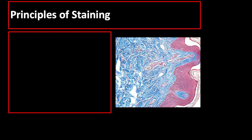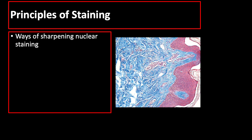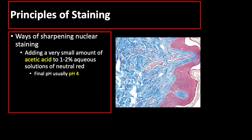Staining depends largely on the attachment of dyes to proteins that have both positively and negatively charged groups. A tissue section contains many proteins that differ in their isoelectric points. At an ideal pH, certain tissue components will show a relative acidophilia whereas others display a relative basophilia. Nuclear staining can be sharpened by adding a very small amount of acetic acid to 1-2% aqueous solutions of neutral red, slightly inhibiting ionic staining of background tissues. The final pH is usually about 4.